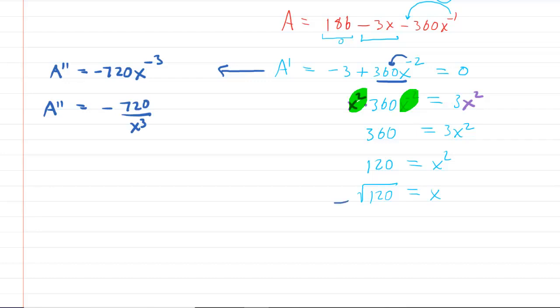And then you have to plug your critical number into the second derivative. Now we only need to determine whether this comes out positive or negative. So we have a negative 720 divided by a positive number cubed. So think of it as just being a negative divided by a positive, which of course is overall negative.